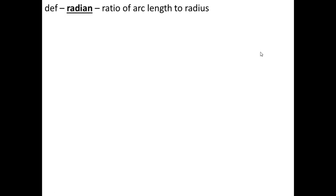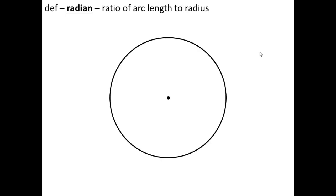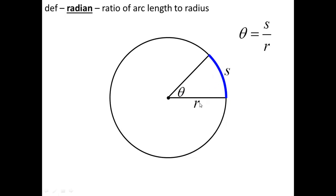So, degrees — they make no mathematical sense. They're based on an arbitrary measurement by a long-dead civilization that we have not been able to kick over millennia. A radian, on the other hand, has a precise mathematical definition based on mathematical logic. A radian is a ratio — it is the ratio of the arc length of a circle to its radius. If you give a circle and measure an angle theta, that angle cuts off a measure of the circle called the arc length, often represented by S. The radian is the ratio of that arc length to the radius.